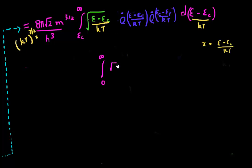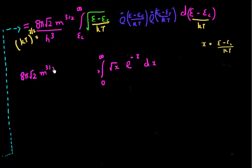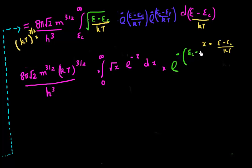All the other terms are constant, so let me collect them. I have 8 over root 2 times m to the power 3/2, then kT to the power 3/2, divided by h-cubed. This whole thing is then multiplied by e to the power of minus (EC minus EF) over kT. The only thing left to evaluate is this integral, and it looks like it might have a simple formula or evaluate to a simple value.